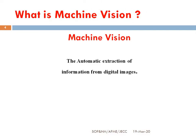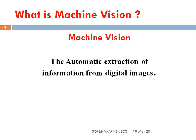So first of all, what is machine vision? Simply defined, machine vision is the automatic extraction of information from digital images. We use a camera to capture images; those images are converted into input to inspect or take measurements. Machine vision is the technology and methods used to provide image-based automatic inspection and analysis for applications such as automatic inspection, process control, robot guidance — usually in industrial automation environments, but also used in other environments such as security and vehicle guidance.